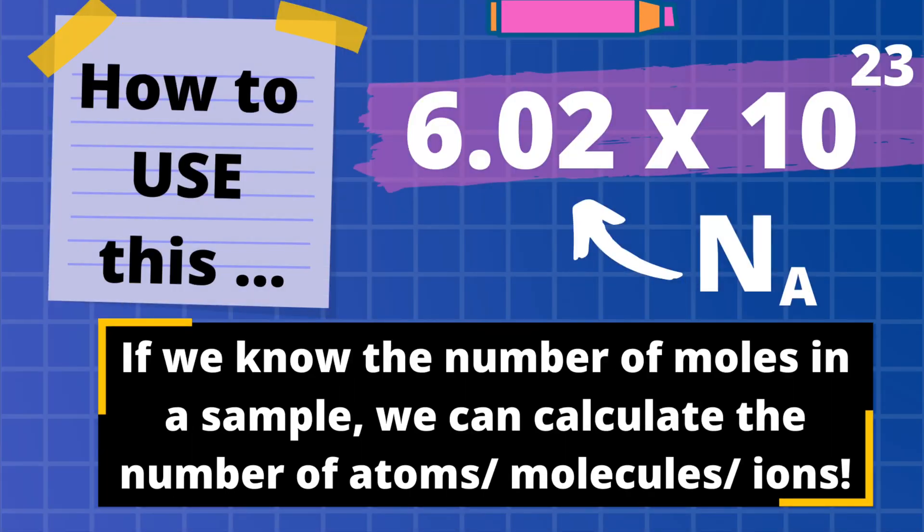Once you're comfortable with the equation, the next step is combining it with a number called the Avogadro constant. The Avogadro constant has a value of 6.02 × 10²³. If you take your mole value and multiply it by the Avogadro constant, it tells you the individual number of atoms, molecules, or ions — depending on context — that you have in your sample of the substance.